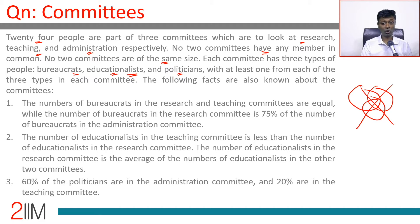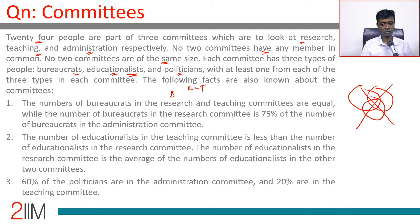The following facts are also known about the committees. The number of bureaucrats in the research and teaching committees are equal — so bureaucrats: research equals teaching. The number of bureaucrats in the research committee is 75% of the number of bureaucrats in the administration, so research bureaucrats = 0.75 × admin bureaucrats.